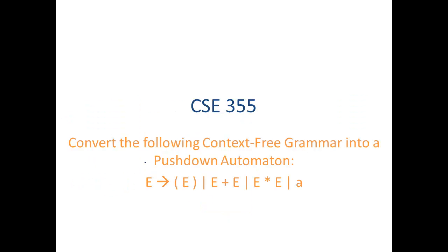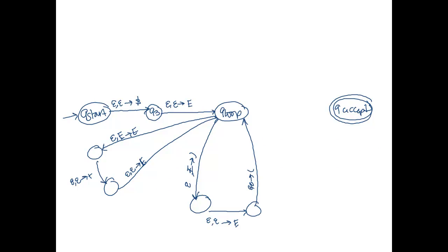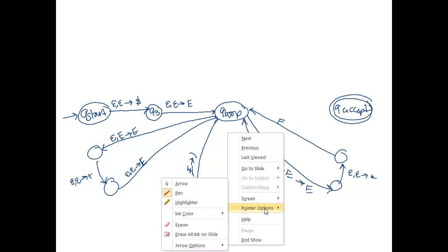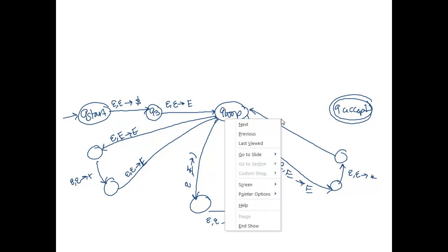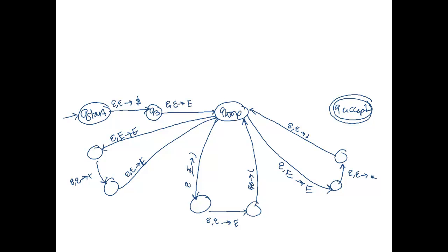We also have e star e. Let's make another one of these. Again, two states. We're going to zip off this way. We read no input, we read an e on the top of the stack, so then we push the rightmost e. Then we push the middle symbol, it's a star, and then we push the leftmost e.